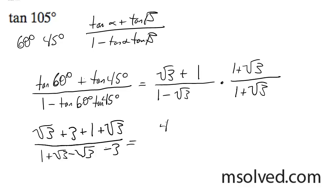So on top, we get 4 plus 2 root 3. On the bottom, we have these two radicals cancel each other out. 1 minus 3 minus root 3 minus root 3. So we can pull out a 2 out of this.